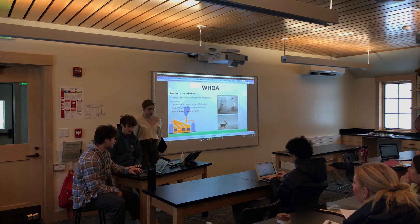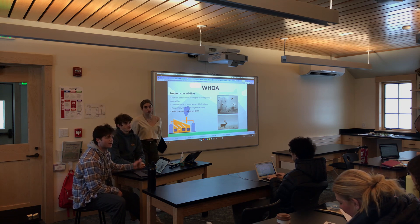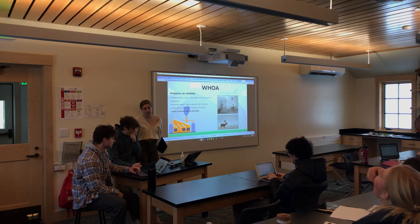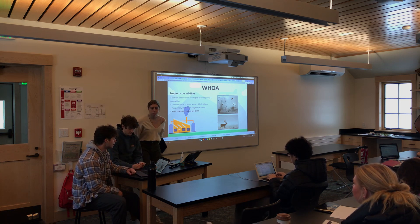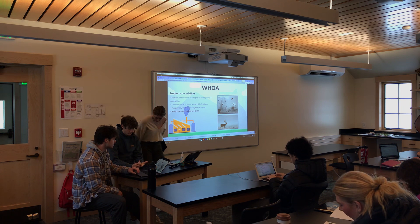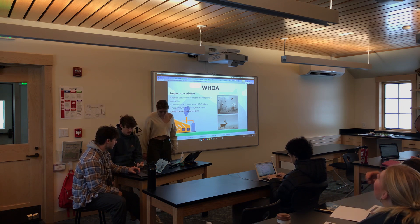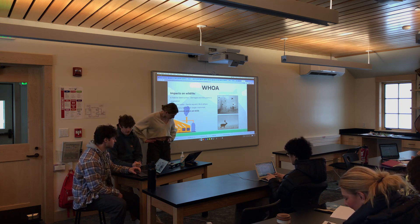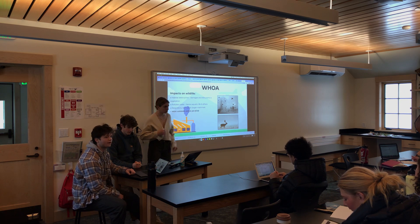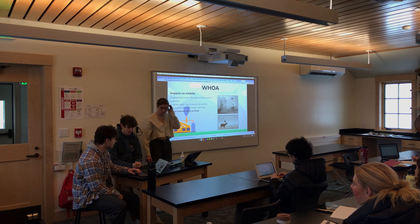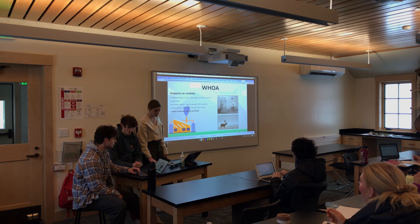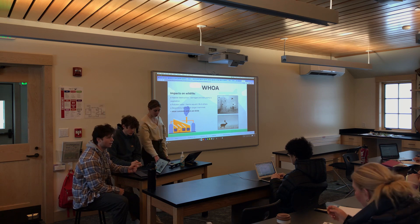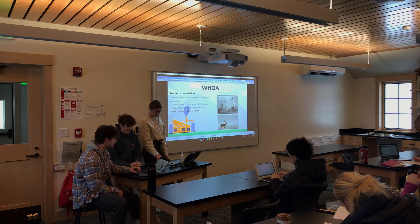Effects on wildlife are similar in some ways — larger mammals can get the same respiratory problems. The most common victims are birds, because they inhale smog pollutants at a much higher rate. It also causes habitat destruction, damaging and killing plants and vegetation that animals rely on for food and shelter. It also pollutes water sources, severely affecting both animals that drink from them and aquatic life within them.